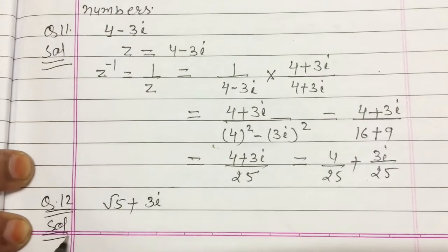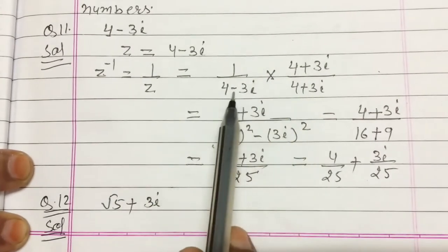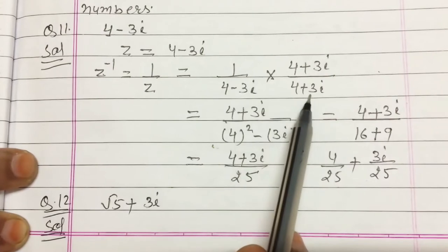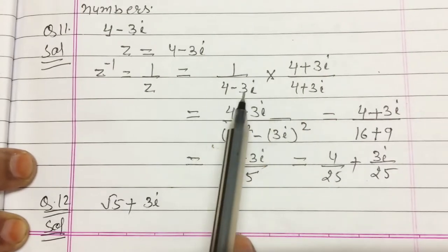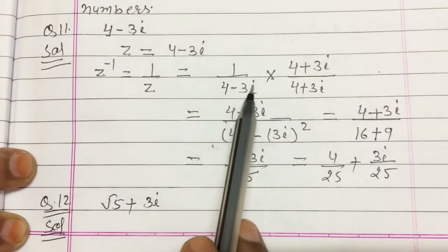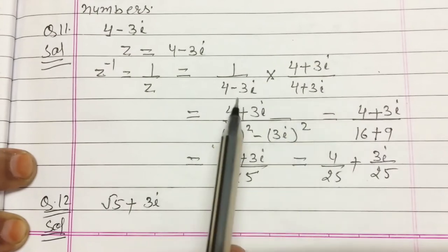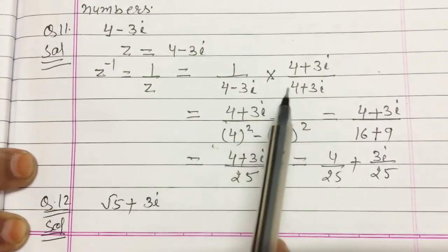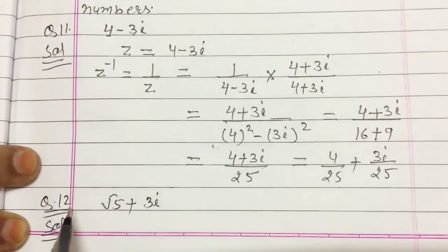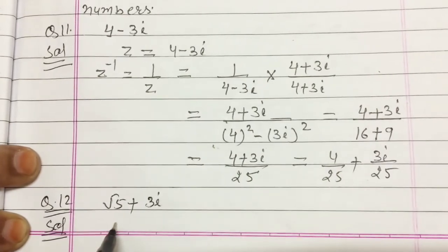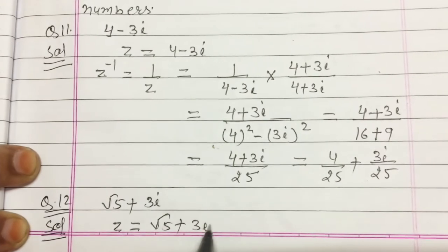Now question number 12, which is the same type as question 11. In the next video I will clear the concept of conjugate of a complex number — it simply means changing the sign of the imaginary part, but there are more properties which I will explain there. For question 12, let z = √5 + 3i.